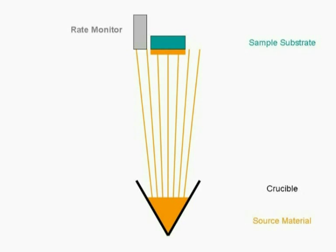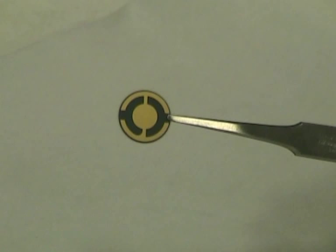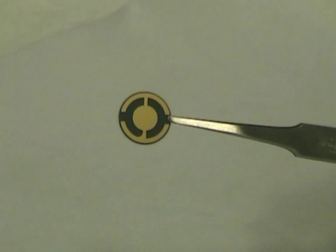A sample substrate above the crucible will condense the gas so that a layer of material grows on the substrate surface. To measure how much material is deposited, we have a rate monitor that is exposed at the same time as the samples.